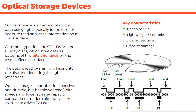Optical storage uses lasers to burn, read, and write information on a disk surface. Common types include CDs, DVDs, and Blu-ray disks, which store data as patterns of tiny pits (burnt out areas) and lands (unburnt areas) on the disk's reflective surface. Data is read by shining a laser and detecting light reflections. Optical storage is portable, inexpensive, and durable, but has slow read-write speeds and lower storage capacity compared to modern alternatives. Key characteristics: cheap per gigabyte, lightweight, portable, slow access times, prone to damage.